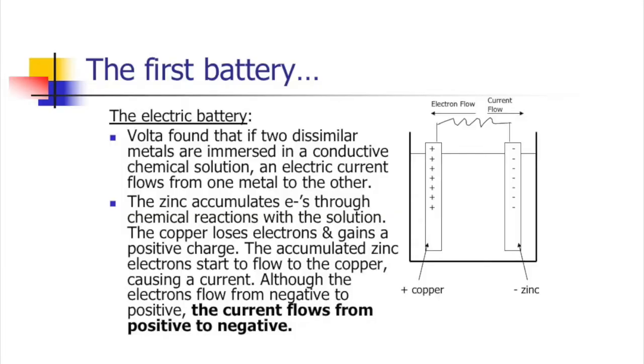If you place a wire between the two pieces of metal, where there are too many electrons they want to repel and move away to where there are too few. So electrons are going to be flowing from negative to positive.